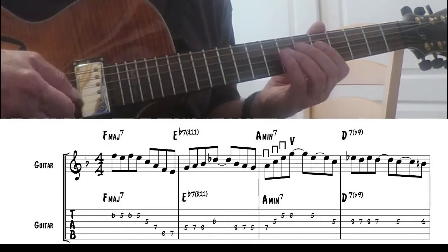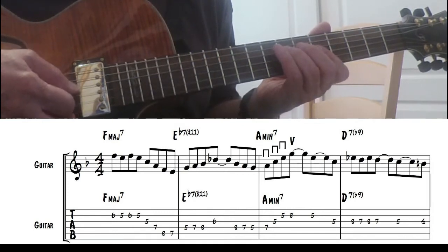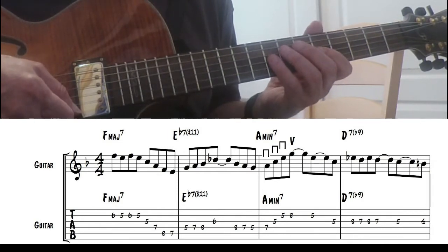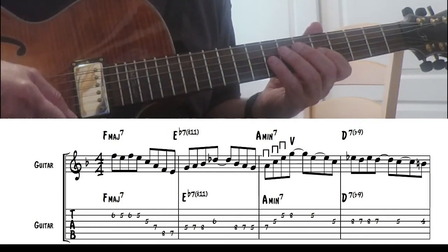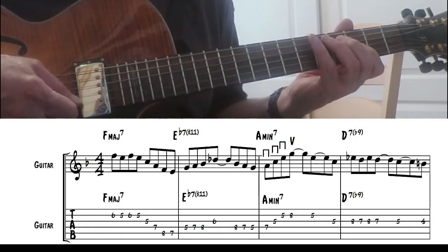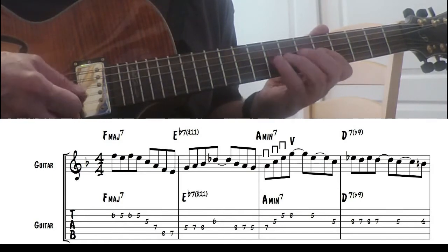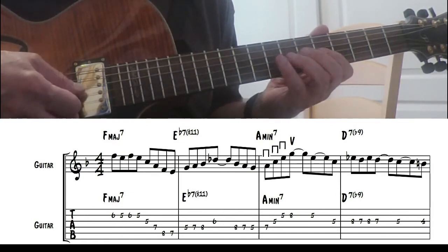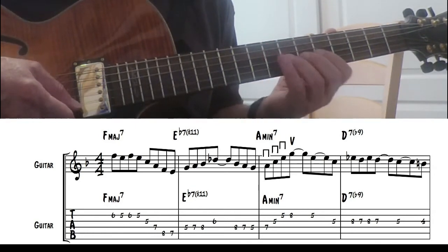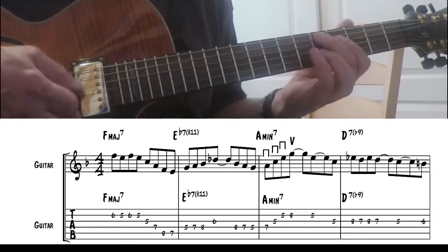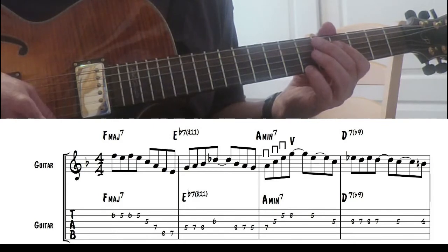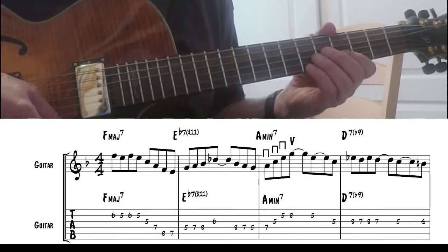Then on the Am7 we just have a straight ahead Am7 arpeggio. On the D7b9 I'm using the 5th of the G harmonic minor starting on the 5th scale degree. It really outlines that chord nicely. So that gives you the b9 and the b13. It's the same as a D7 Mixolydian with a b9 and a b13.